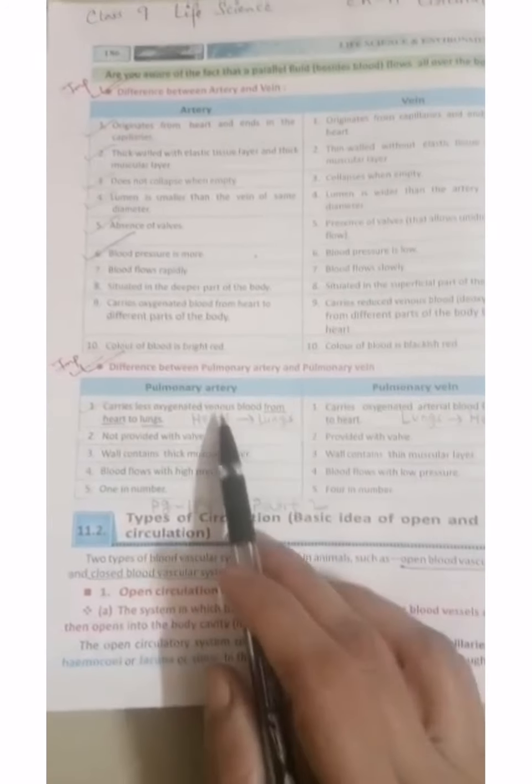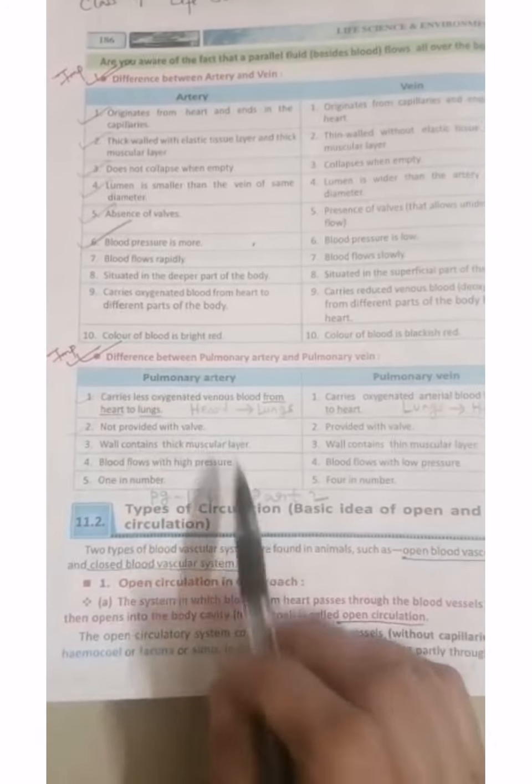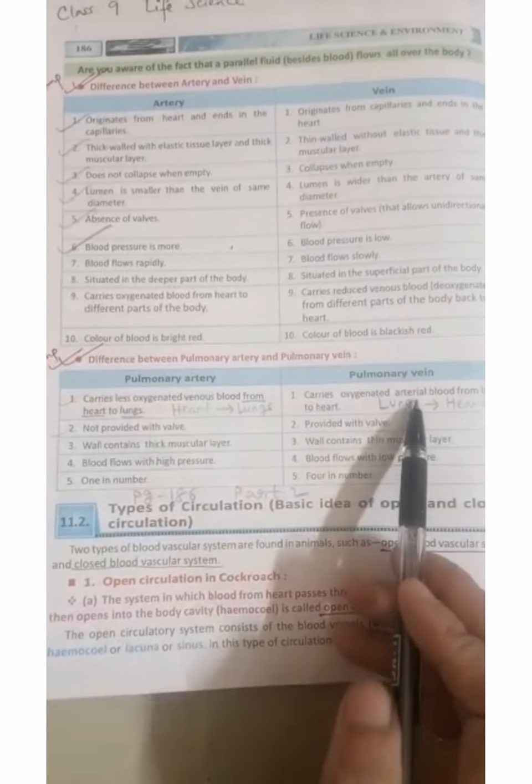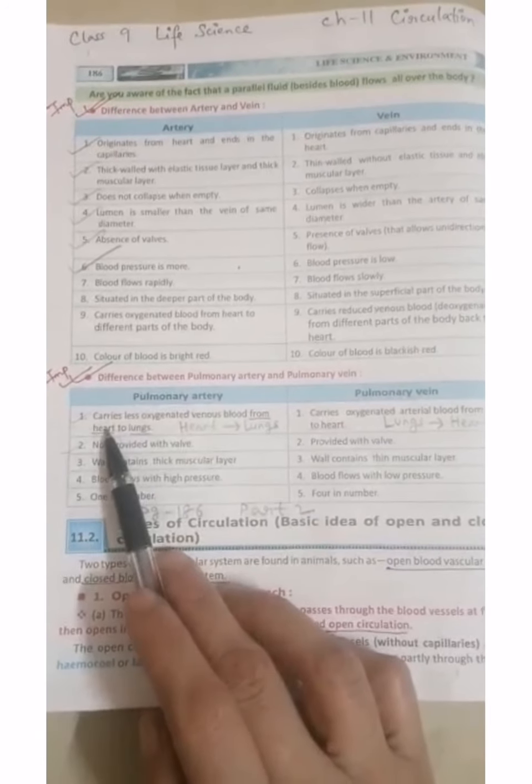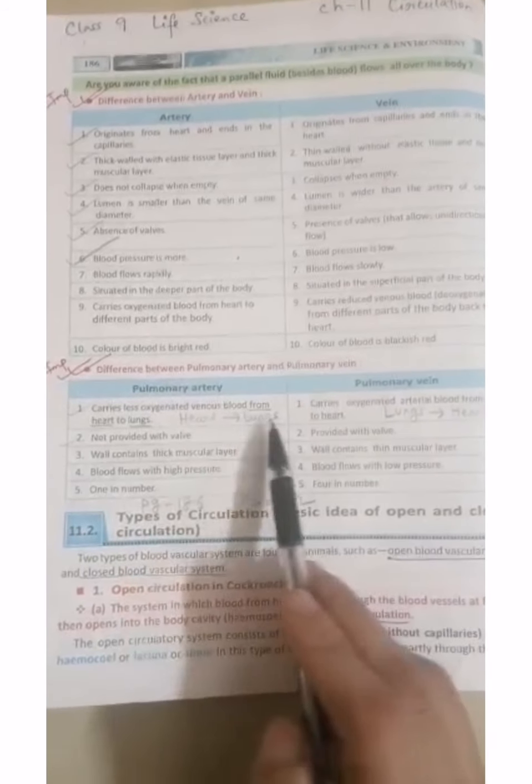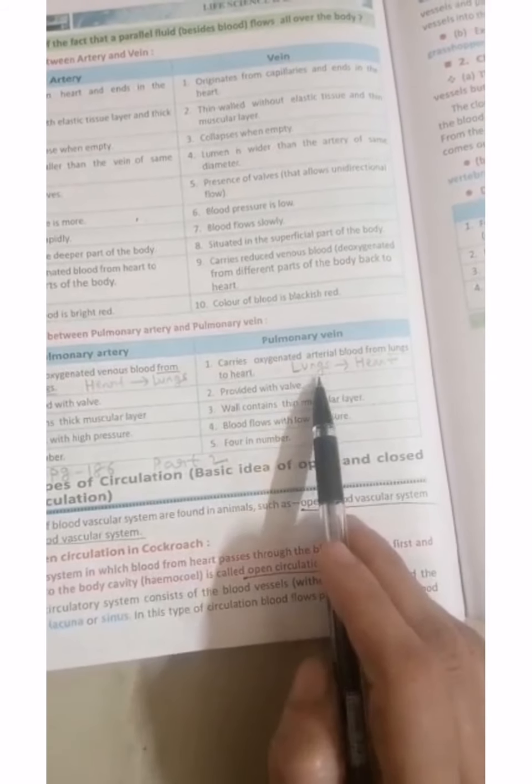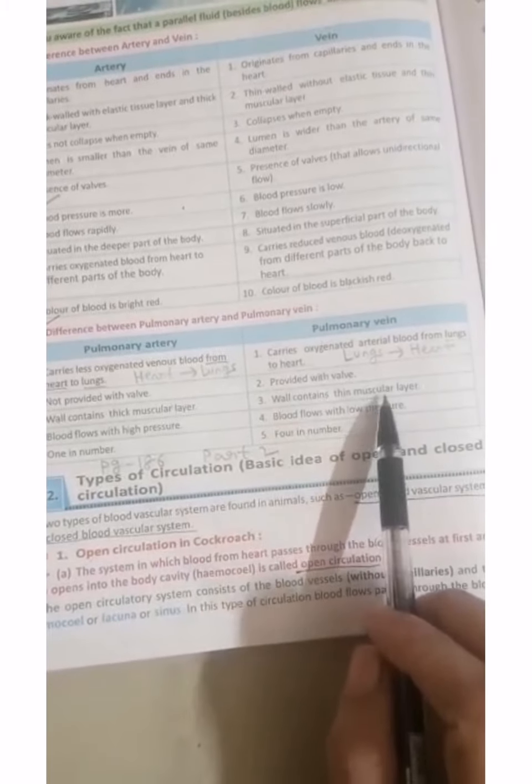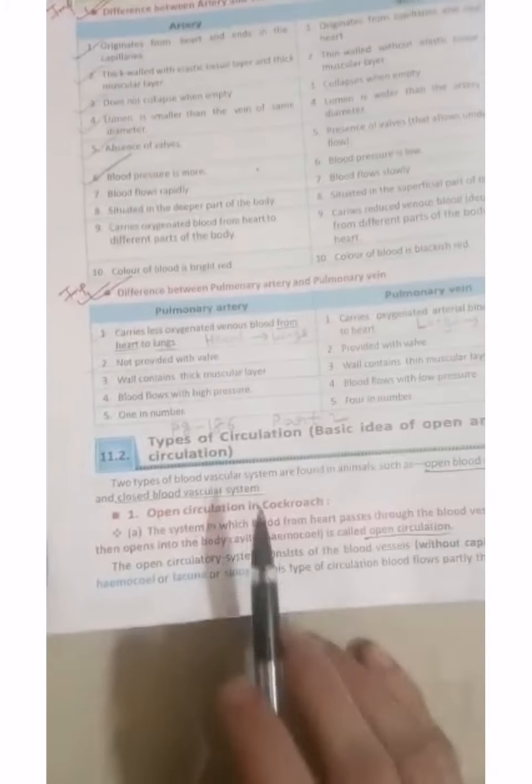Now the next difference is between pulmonary artery and pulmonary vein. It carries oxygenated blood from heart to lungs, and pulmonary vein carries blood from lungs to the heart. Pulmonary artery has thick muscular layer and in pulmonary vein, wall contains thin muscular layer. So you must remember the whole five points.